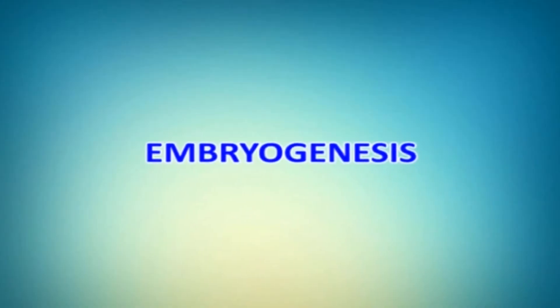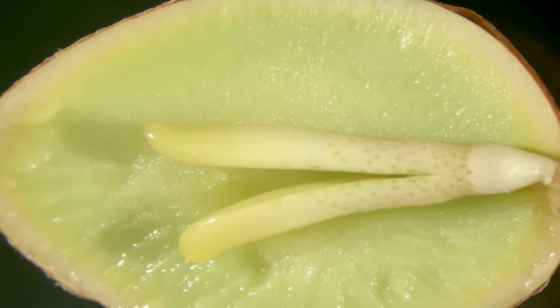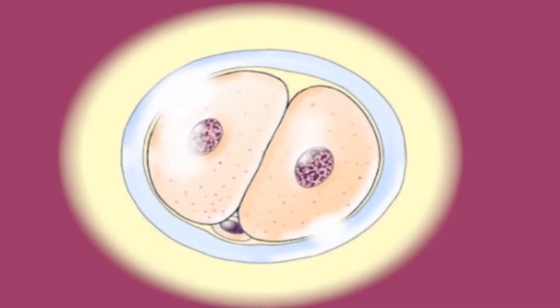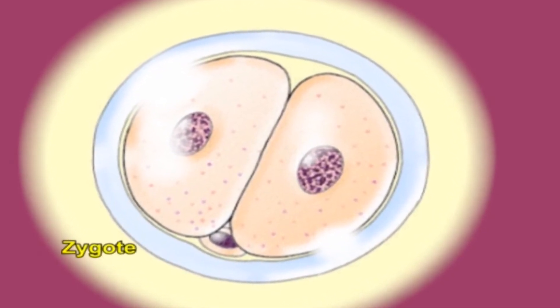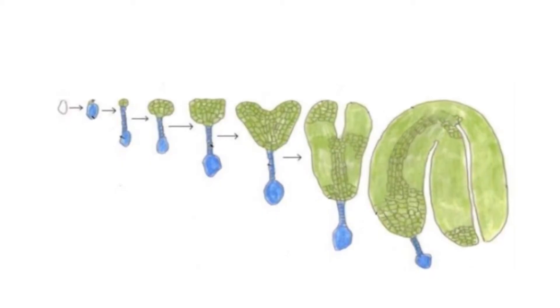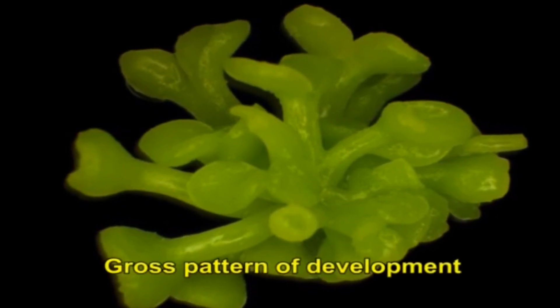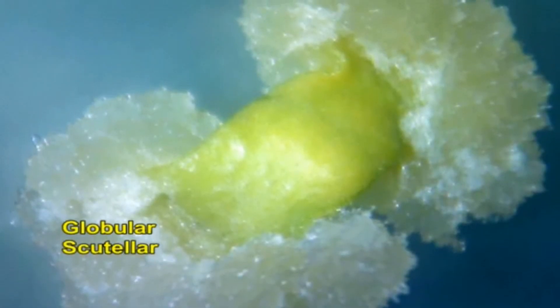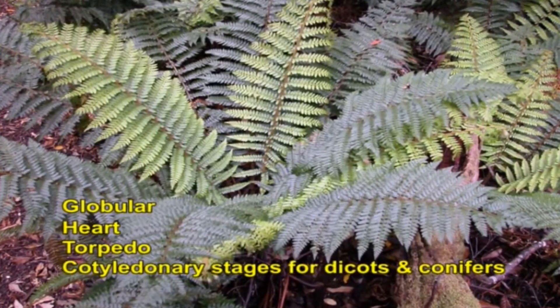Let us now move on to embryogenesis. Embryogenesis is the process of initiation and development of an embryo from a zygote or a somatic cell. Embryo development occurs through systematized arrangement of cell division, development and separation. Zygotic and somatic embryos share the same gross pattern of development, passing through typical developmental stages such as globular, scutellar and coleoptilar stages for monocots, and globular, heart, torpedo and cotyledonary stages for dicots and conifers.